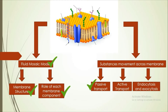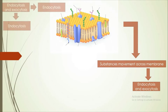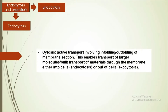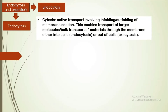So now we have covered active transport. Finally, we will cover endocytosis and exocytosis. In general, cytosis is an active process involved in the in-folding or out-folding of membrane sections. This enables transport of larger molecules or bulk transport of material through the membrane, either into or out of cells.